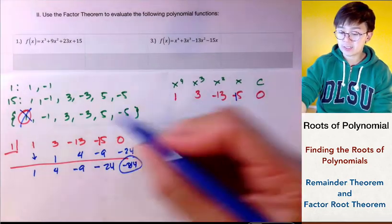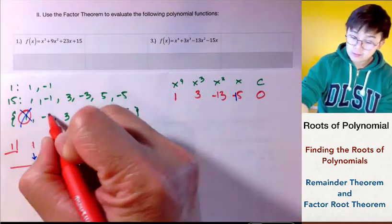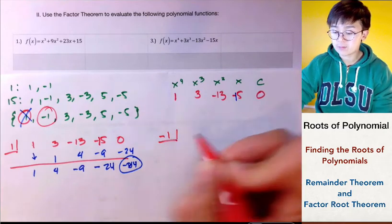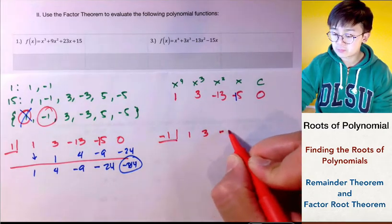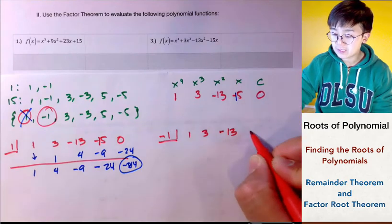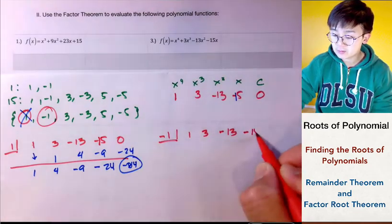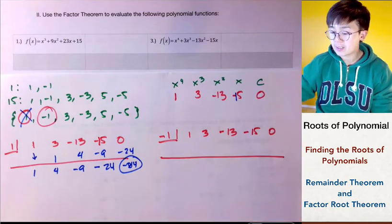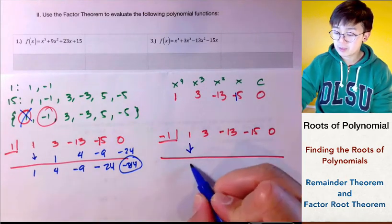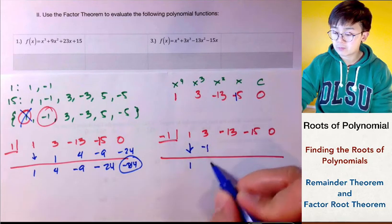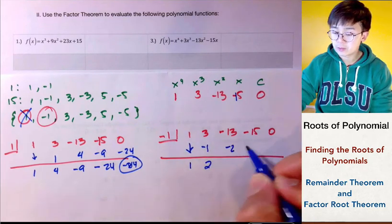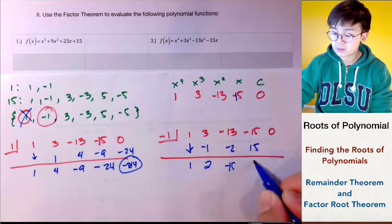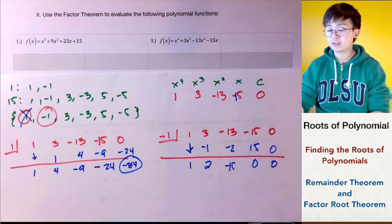Let's try negative 1 as the next candidate, hoping for a remainder of 0. With the corrected constant of negative 15, using synthetic division: 1, negative 1, 2, negative 2, negative 15, and 15 gives us 0, 0, and 0. So negative 1 gives a remainder of 0.